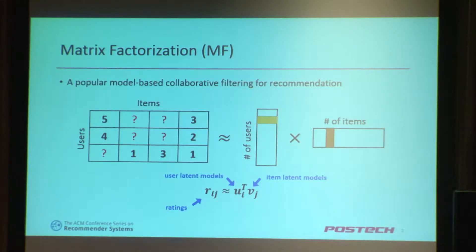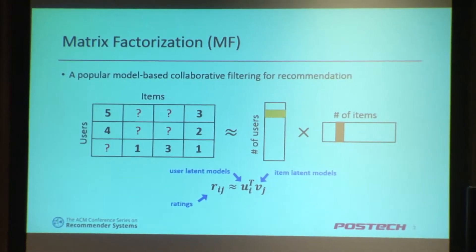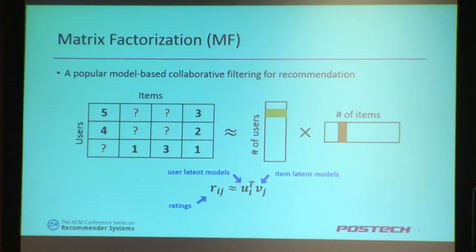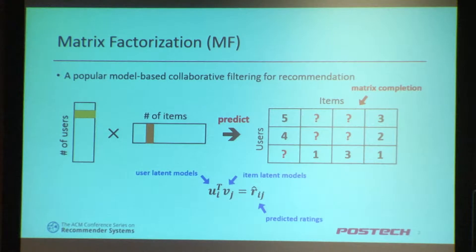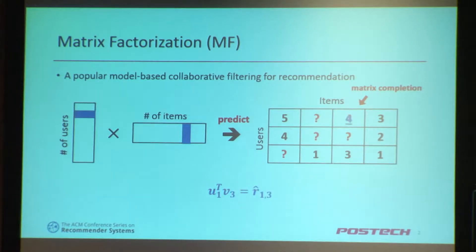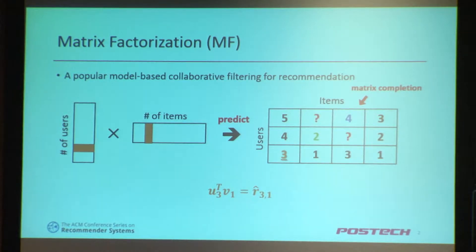Matrix factorization is a popular model-based collaborative filtering technique for recommendation, used to generate user and item latent models. These item latent models are used to predict unknown ratings, which can be regarded as a matrix completion problem. With these predicted ratings, we can recommend proper items to each user.